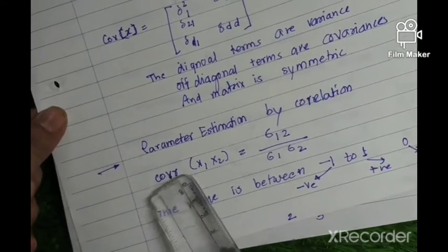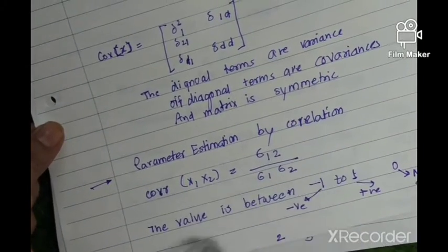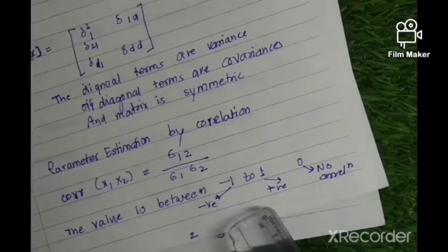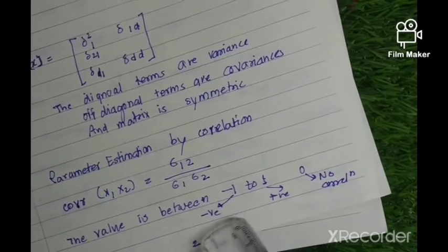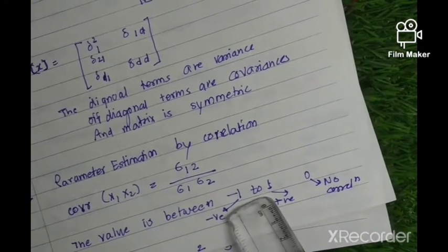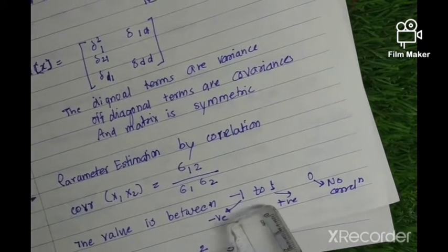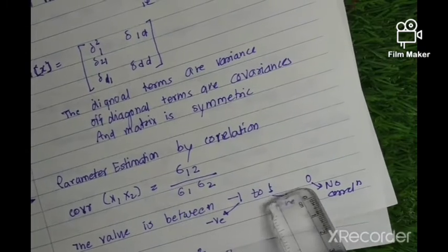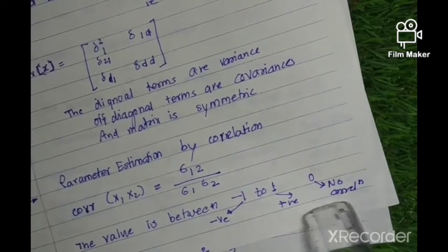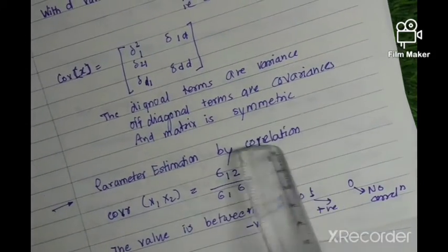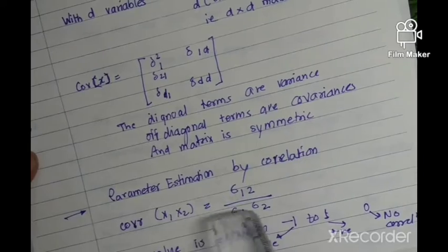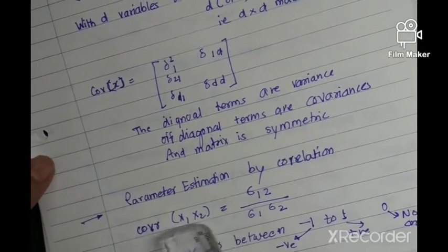For correlation, the correlation value ranges between -1 and 1, where -1 represents negative correlation, 1 represents highly positive correlation, and 0 represents no correlation. We can calculate correlation using the formula involving δ₁₂ and δ₁, δ₂ for x₁ and x₂.